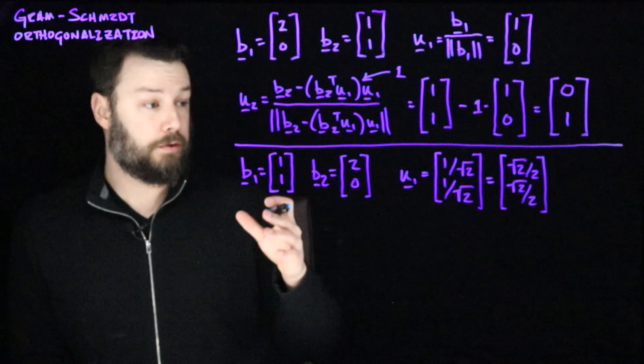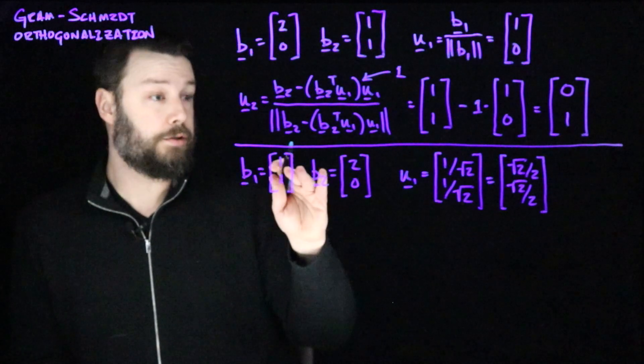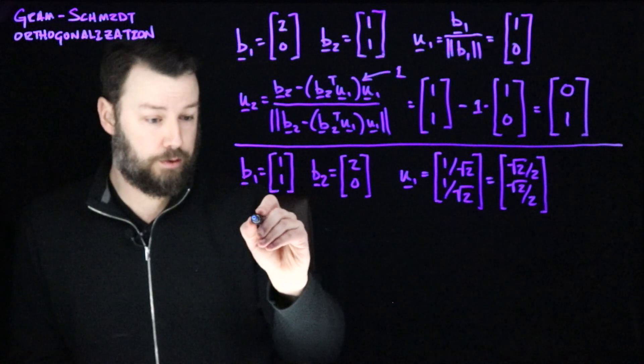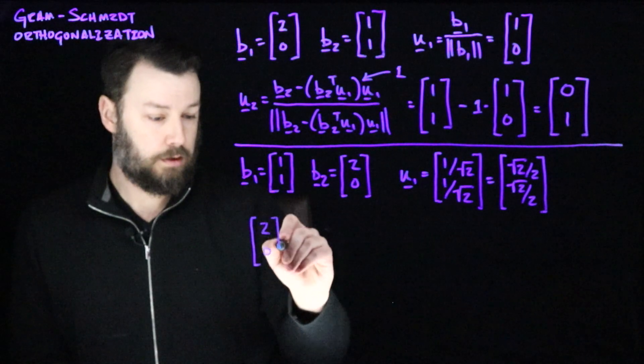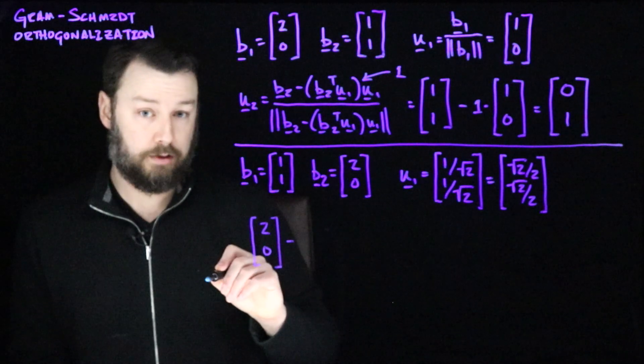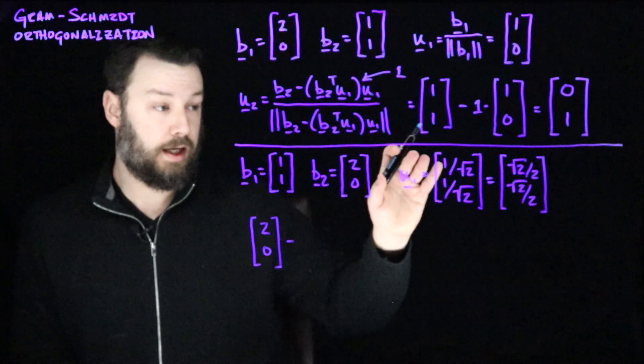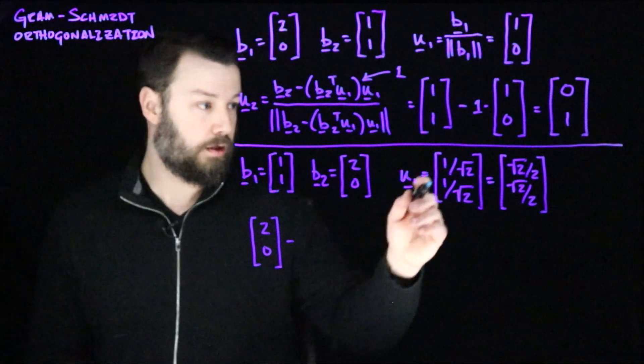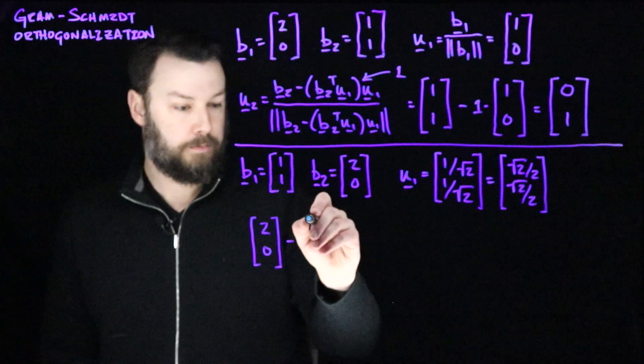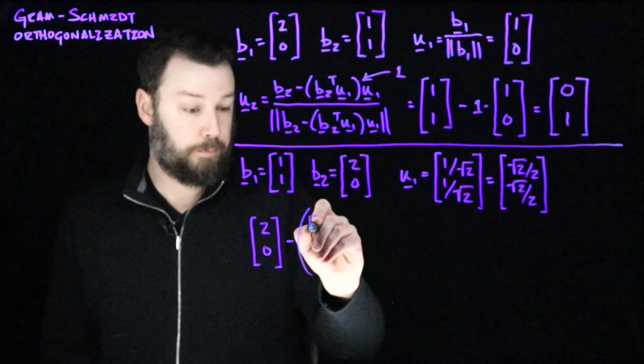So now let's compute u2. Now, our starting point is going to be to take b2. So it's to take 2, 0, and subtract from that the inner product of b2 and u1. So what's the inner product of b2 and u1? Well, let's see. It's going to be, let's just write this out. Let's say b2 transpose. So we'll write 2, 0.